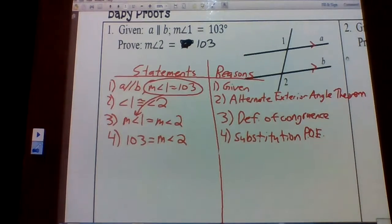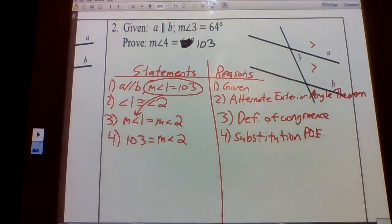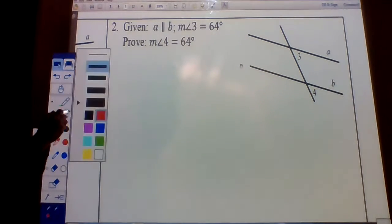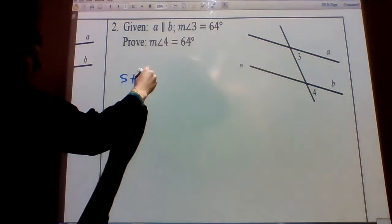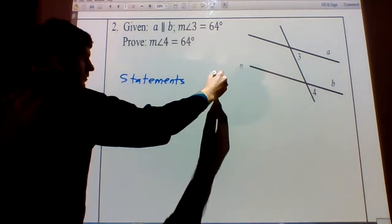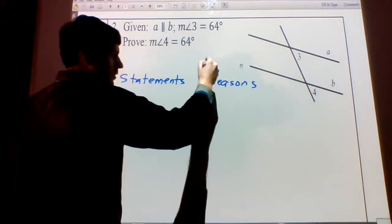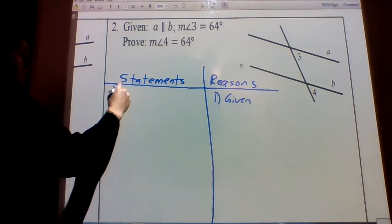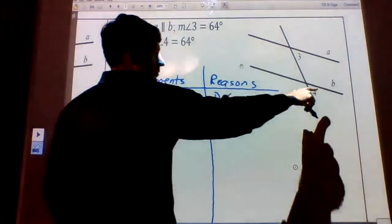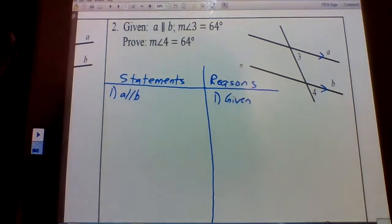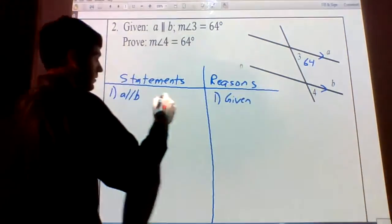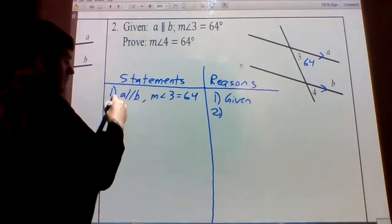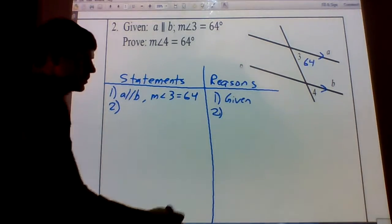Let's go on to the next proof, which is very similar — almost the same thing except instead of alternate exterior angles you're going to have corresponding angles. Let's start with our statements and our reasons. We start with our given every time. We're given that line A is parallel to line B, and we're also given that the measure of angle three is 64.